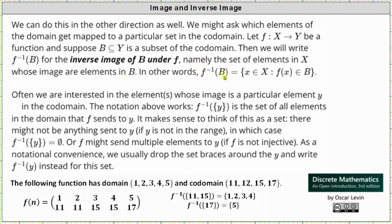In other words, the inverse image of B under F is equal to the set of x where x is an element of the domain such that F of x is an element of B, where B is a subset of the codomain. Often we are interested in elements whose image is a particular element y in the codomain, and the notation above gives us the set of all elements in the domain that F sends to y.